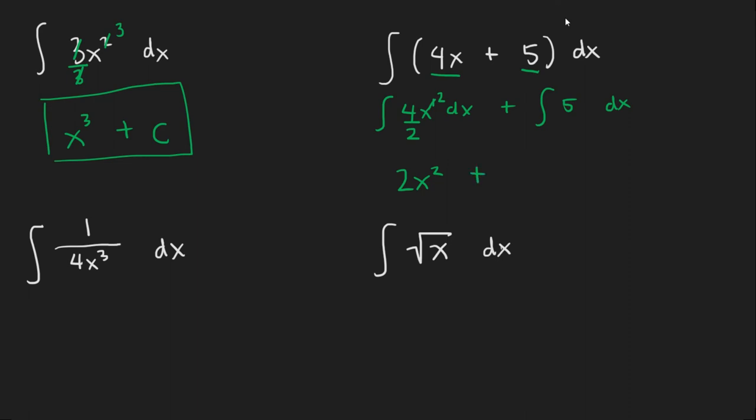Then for our second term, this 5 is actually a 5x to the 0th power because x to the 0th power is just 1. So if we add 1 to the power we get x to the first. Then we divide by 1. We're just left with 5x. So the anti-derivative of any constant is just going to be that constant times x. And don't forget to add the C and there is our answer.